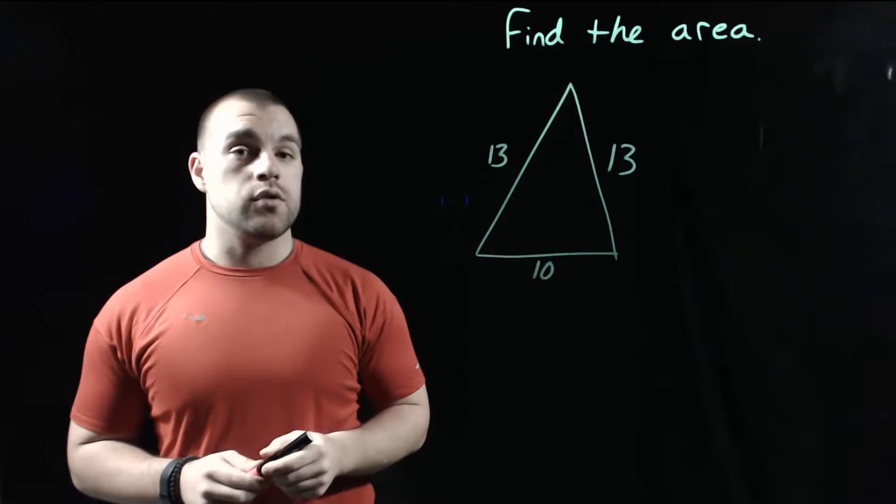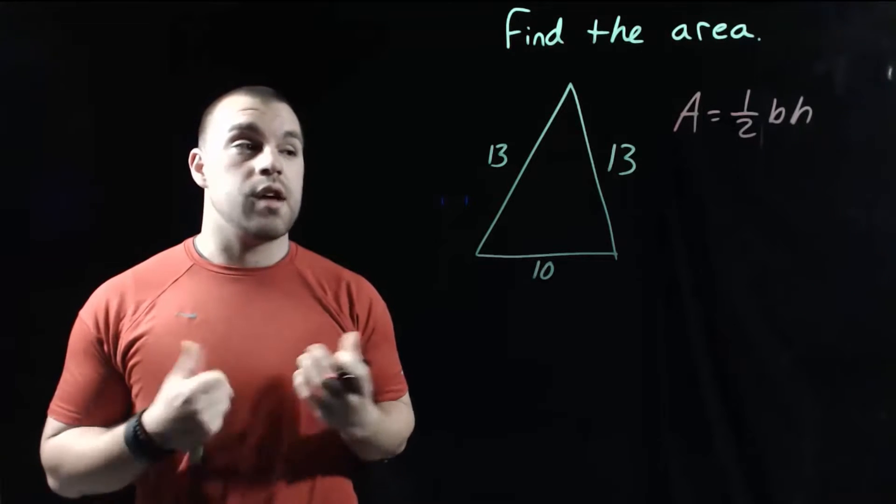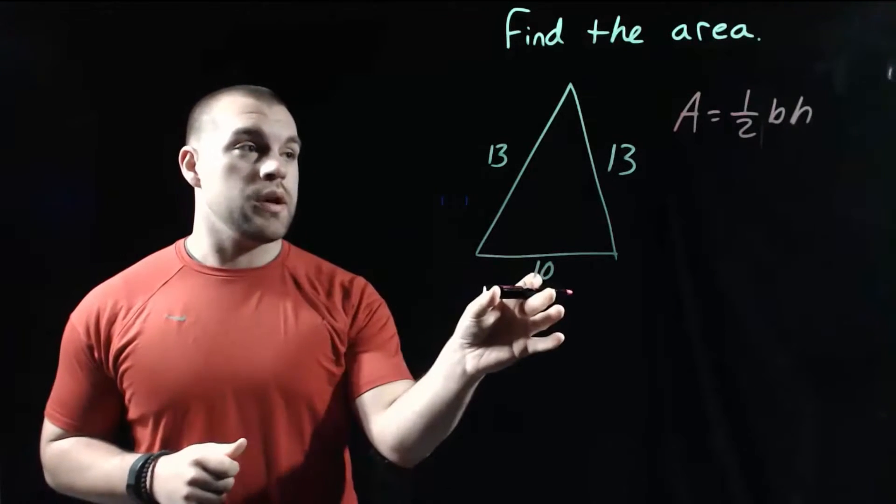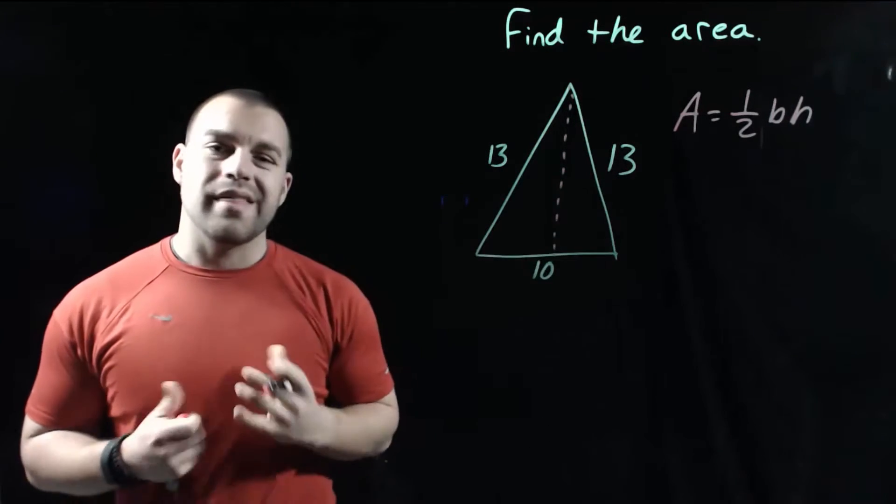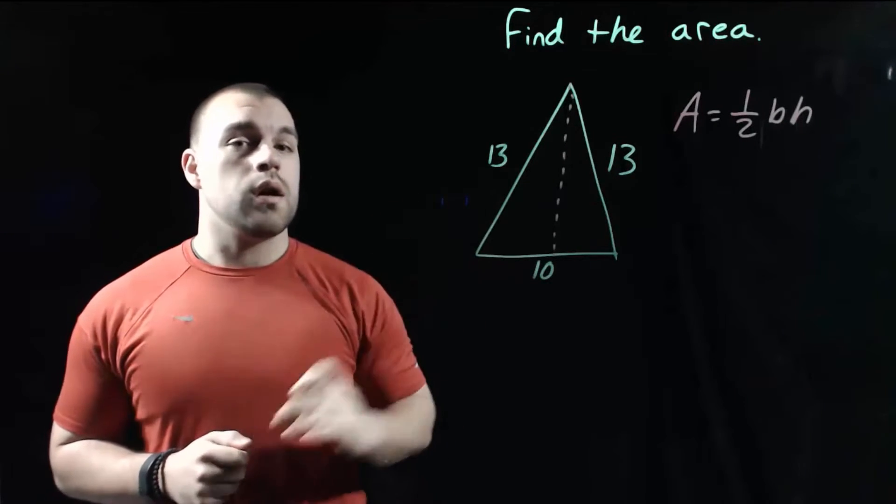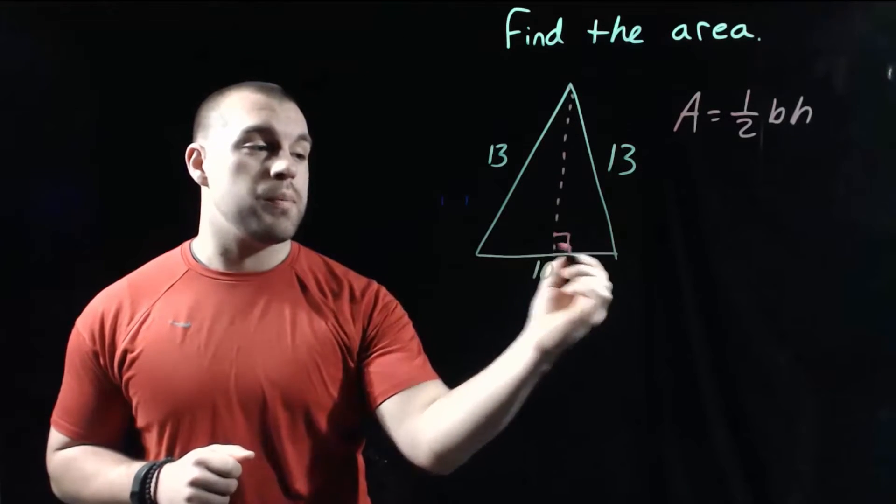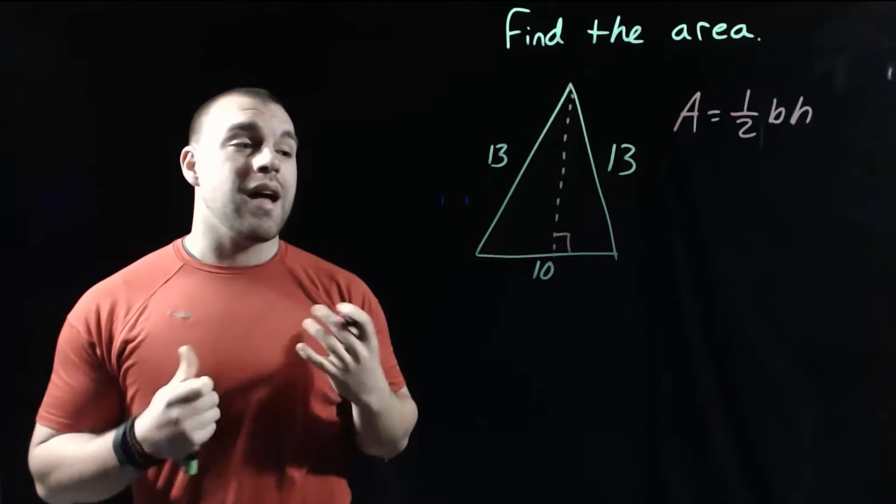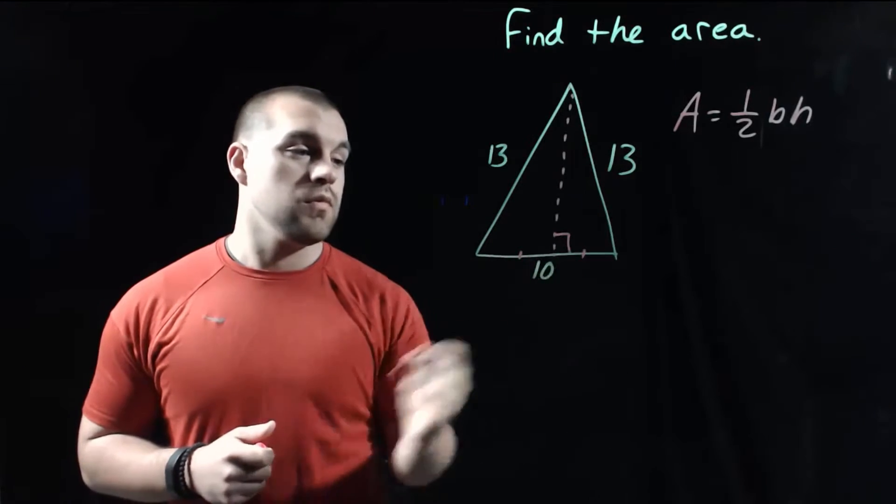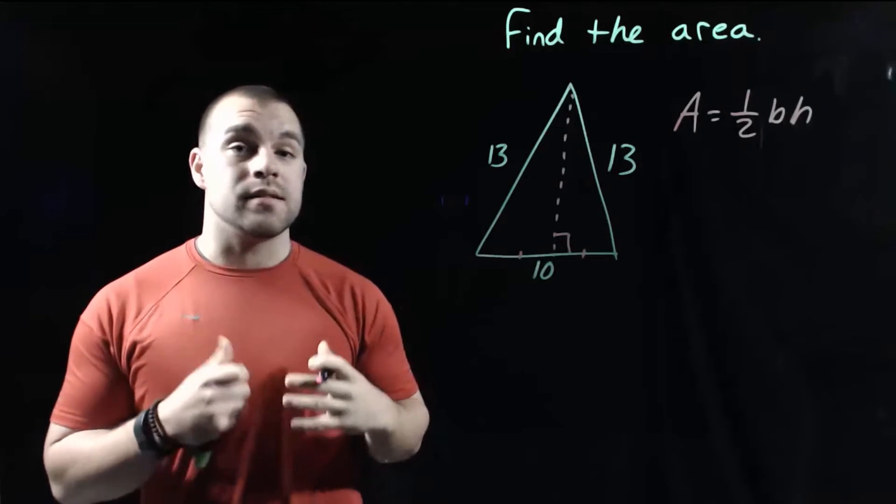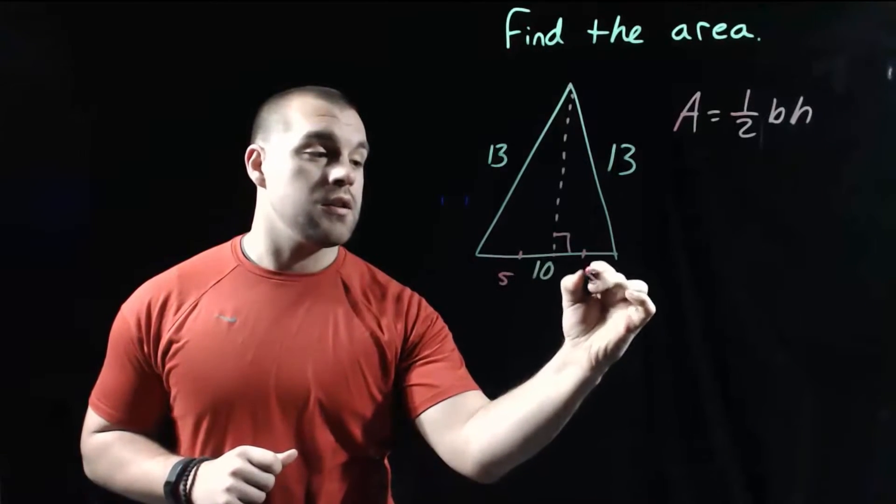Remember in order to find the area of the triangle we take one half times the base of the triangle times the height of the triangle. The problem with this one though is we don't know the actual height of our triangle. That's what we need to figure out. When we draw in that height, that's called an altitude of the triangle, and that altitude is perpendicular to the base and cuts that base into two congruent pieces. So if the entire length of the base is 10, then each small piece is 5.